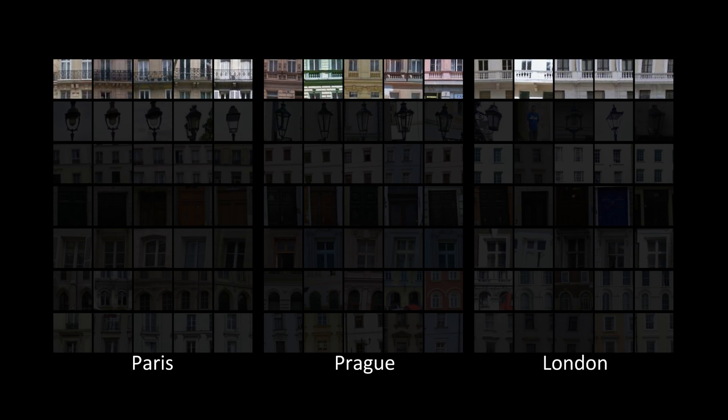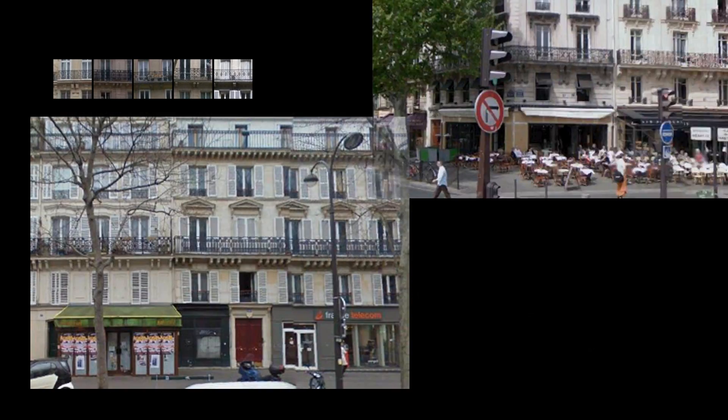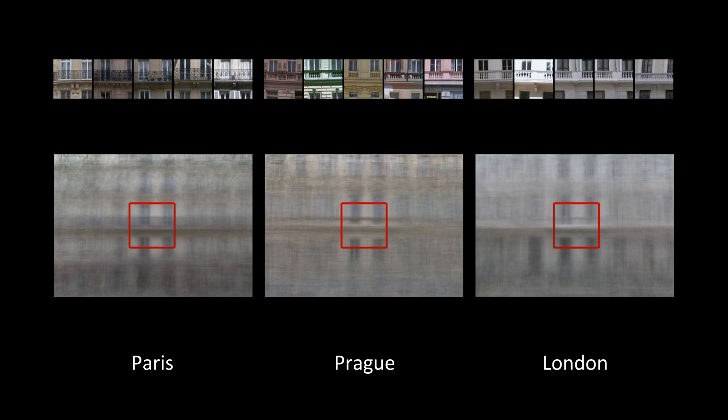It's also interesting to visualize the facades around each element. We start with several images containing a given element and then average them, centered on that element. If the same element occurs in multiple cities, we can create per-city averages and compare facades. Note how the balcony occurs on the third floor in Paris, but on the second in Prague and London.